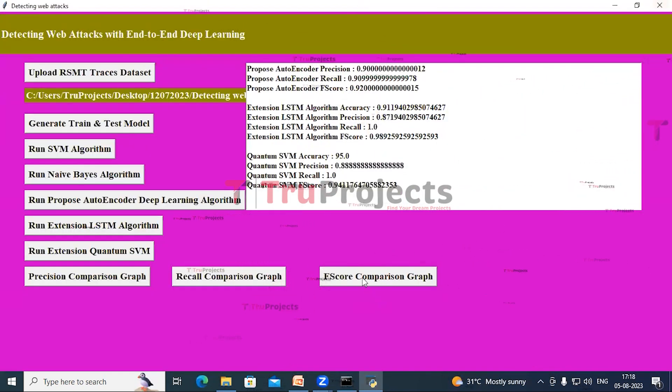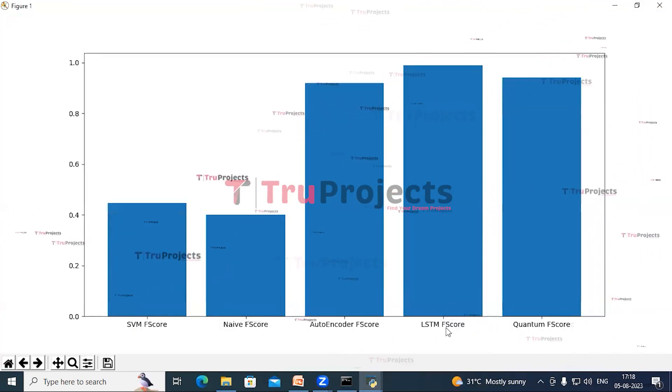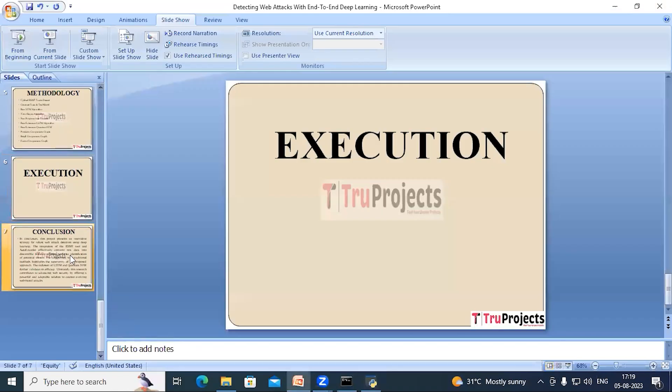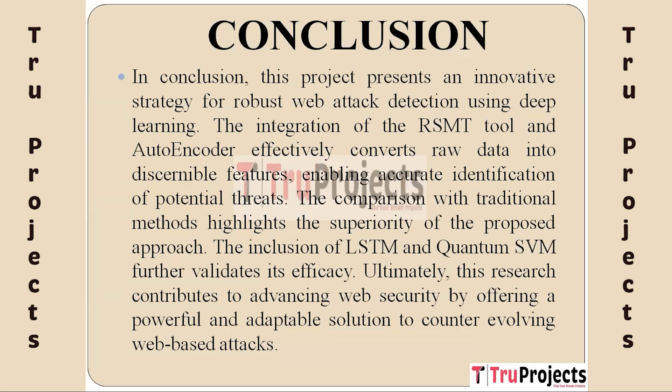Close this and now click on F-score comparison graph button. We can see LSTM has got the highest F-score when compared to other algorithms. In conclusion, this project presents a novel deep learning approach for robust web attack detection. A precise identification of potential threats is made possible by the efficient transformation of raw data into distinguishable features through the integration of the RSMT tool and autoencoder. The addition of LSTM and quantum SVM strengthens the validity of its effectiveness. This project advances web security by providing a potent and flexible defense against dynamic web-based attacks.